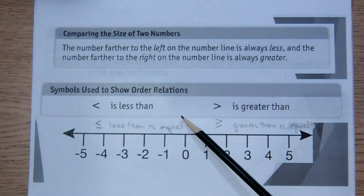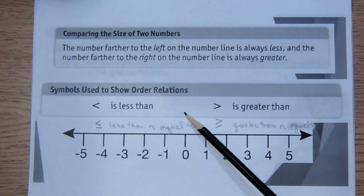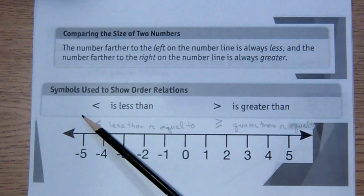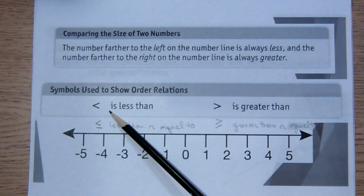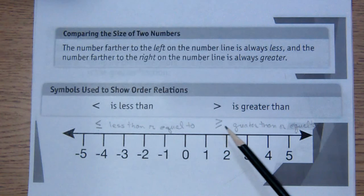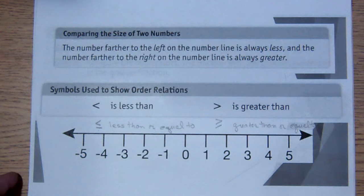We use symbols to show this order relationship. The arrow always points at the smaller numbers, so we would read this as the number over here is less than the number over here. Similarly, we would say the number over here is greater than the number over here. We can also put an equal sign under it and then it stands for less than or equal to or greater than or equal to.